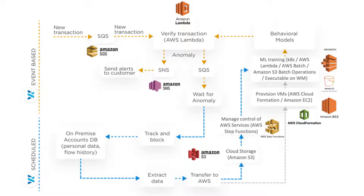The bank can extract the relevant data from the on-premises database, transfer it to AWS cloud storage — that is Amazon S3 — and provision a virtual machine using AWS CloudFormation and the Amazon EC2 service to run machine learning processes using AWS Batch, Amazon S3 Batch Operations, or AWS Lambda.